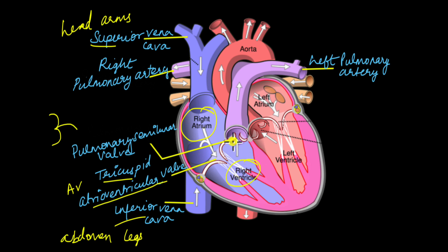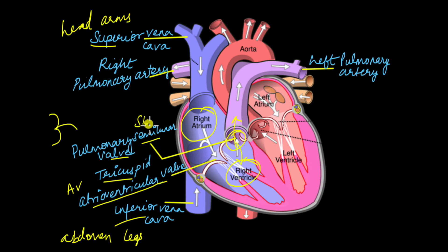From the right ventricle, blood is pushed past the pulmonary semilunar valve. It is called pulmonary because it involves the lungs — that's where the blood goes next — and semilunar because it ensures blood flows only in one direction with no backflow. Through this pulmonary semilunar valve, blood enters the pulmonary artery, which branches into two: the right pulmonary artery supplying the right lung and the left pulmonary artery supplying the left lung.